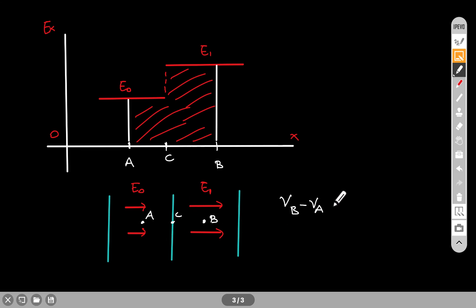Let's say VB minus VA is equal to VB minus VC plus VC minus VA.